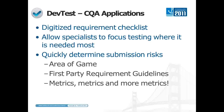Using DevTest really allows the standards team to focus on problem areas of the game and hopefully make those areas better. They can search by area of game, use specific first party requirements that they're looking for, and then set metrics, metrics, and more metrics — which everyone in publisher QA loves to track.